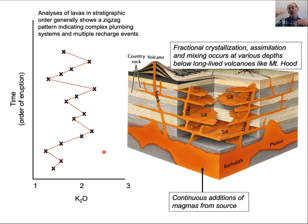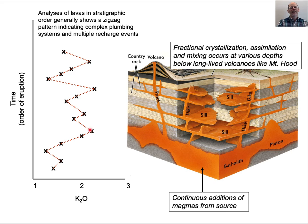If you look at a whole sequence of erupted lavas and analyze their compositions, you can see a zigzag pattern — more primitive, less evolved magmas with lower potassium content alternating with ones that have more potassium content, back and forth repeatedly. This reflects multiple pulses of magma interacting with pre-existing magmas and rocks. There's all this mixing and differentiation occurring, and each little rock has undergone slightly different differentiation or magma mixing.